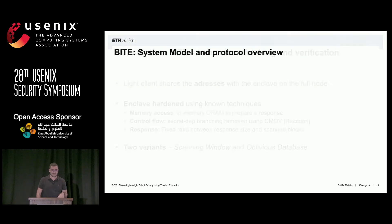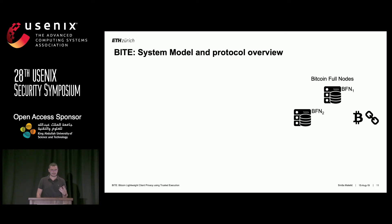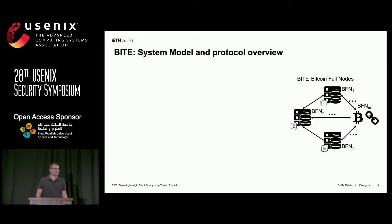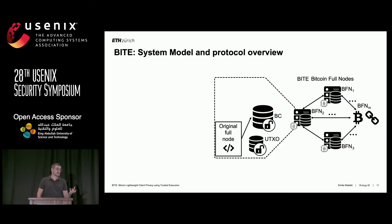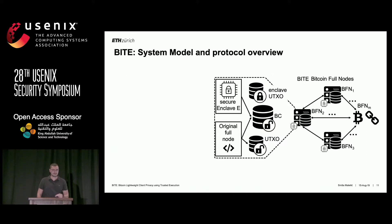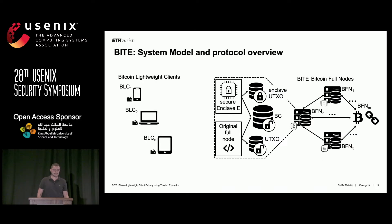For the system model: on one side you have the Bitcoin full nodes and the Bitcoin peer-to-peer network as usual, but now we add enclaves on the full nodes. Looking deeper into one node, you have the original full node code, the blockchain, and the UTXO as a database of unspent outputs, with the addition of a secure enclave and an enclave UTXO — the latter mostly related to the oblivious database variant. On the other side, Bitcoin lightweight clients connect to the full node and request information.